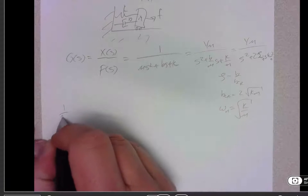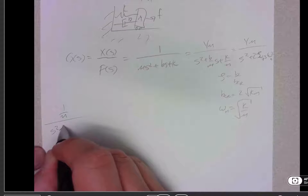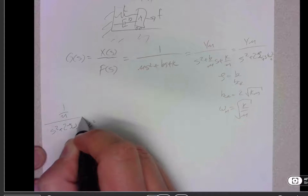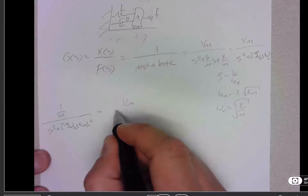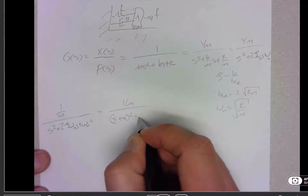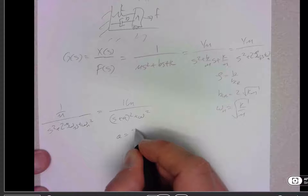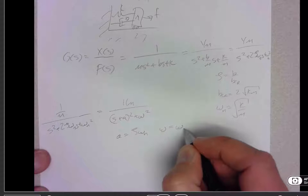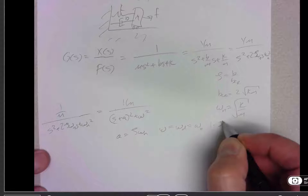We also showed that the same expression could be written as 1 over m times s plus a squared plus omega squared, where a is equal to zeta omega-n, and omega equals omega-d equals omega-n times the square root of 1 minus zeta squared.